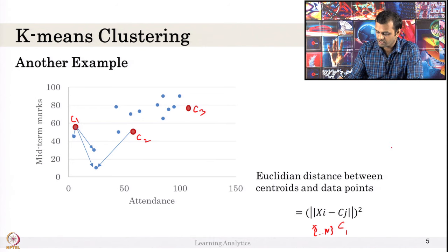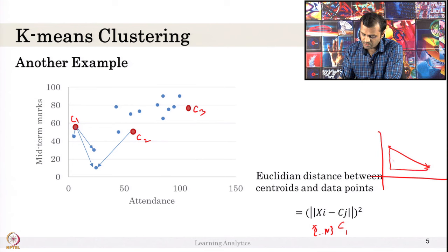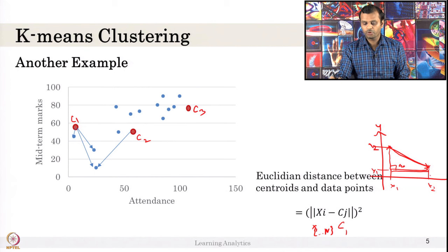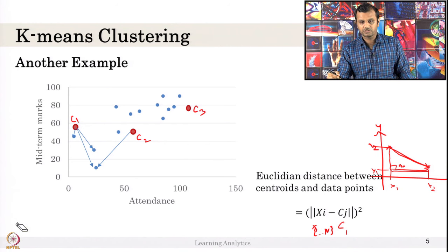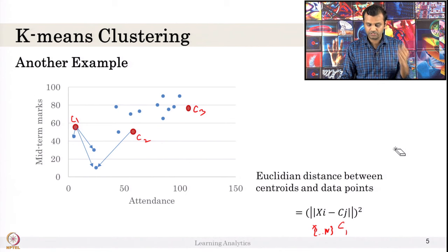Let us see how to compute the Euclidean distance between two points. There is a point here and another point here. To find the Euclidean distance, we compute the minimum straight-line distance between these two points. Simple Euclidean distance uses a right-angle triangle: we know X2 minus X1 for the horizontal side and Y2 minus Y1 for the vertical side. Because it is a right-angle triangle, you can compute the hypotenuse. There are other distance measures like Manhattan distance, but we use Euclidean distance for this clustering technique.